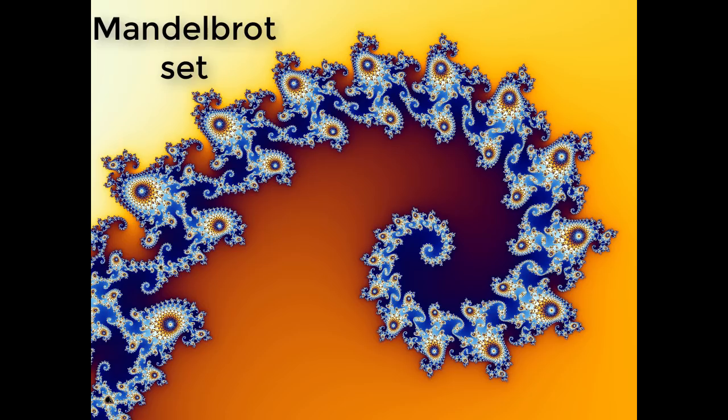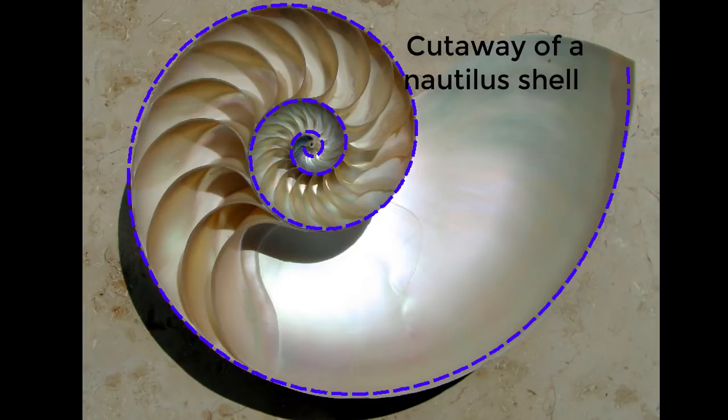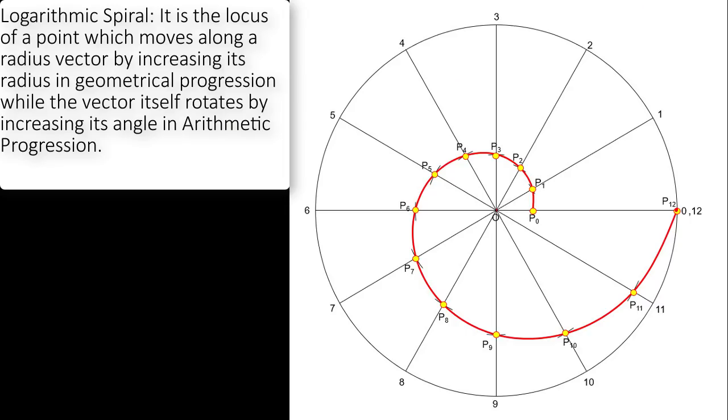Now this very curve has evolved in so many forms that it is in the fabric of mother nature. Remember, the logarithmic spiral can be distinguished from the Archimedean spiral by the fact that the distances between turnings of logarithmic spiral increase in geometric progression or the radius vector increase following a geometric pattern.